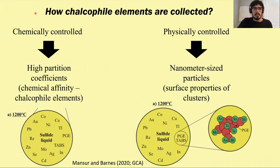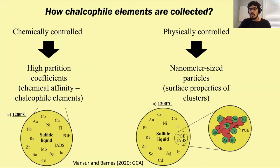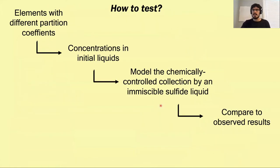The first main question we try to tackle here is how chalcophile elements are actually collected. We have two main models that have been discussed. One is that they can be chemically collected — they have high partition coefficients and an affinity for sulfide liquid, so they dissolve into it. The other is a physical model proposing that PGEs together with some of these TABS semi-metals form nanoclusters in the liquids, and due to surface absorption they are collected by the sulfide liquid.